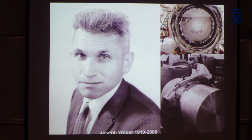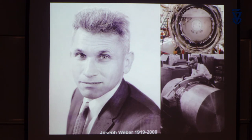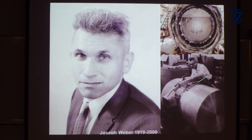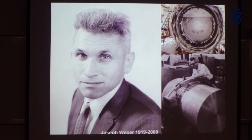Here's Joe mounting little sensors on a huge piece of aluminum — bigger than he is. These are strain gauges that measure the distortion of the bar. That experiment started in the early 1960s, and in 1969 Joe Weber made an astounding publication: he said he had discovered gravitational waves — seen coincident signals in a bar in Maryland and another one about eight miles away, and yet another in the Argonne National Laboratories in Chicago.